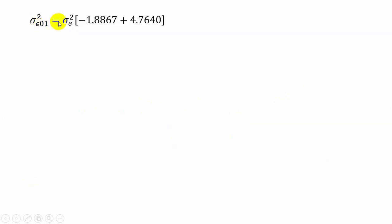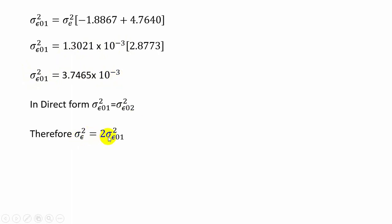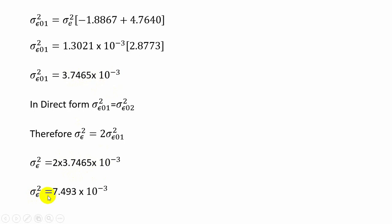The output noise power due to e1(n) equals the input noise power multiplied by (−1.8867 + 4.7640). Since σe² = 1.3021 × 10⁻³, the output noise power due to the first error signal = 3.7465 × 10⁻³. The total output noise power = 2 × 3.7465 × 10⁻³, so the output noise power due to direct form realization = 7.493 × 10⁻³.